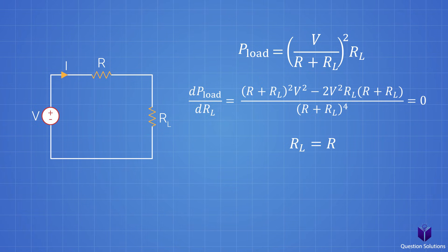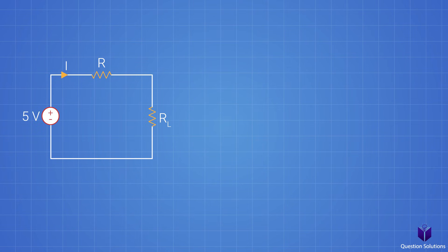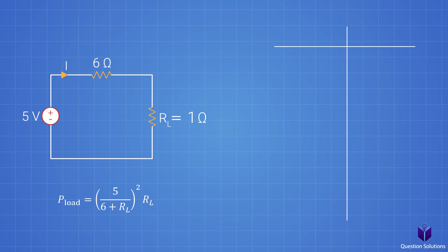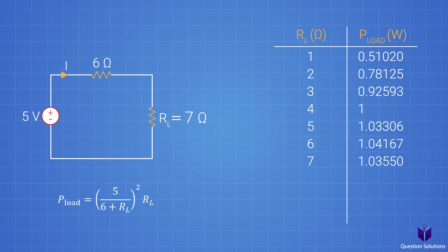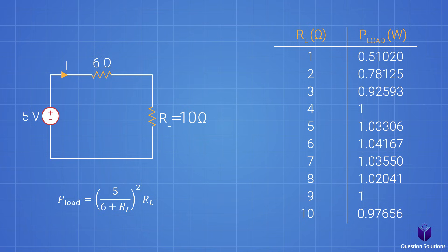To showcase this, let's plug in some numerical values. We'll go with a 5 volt source, a 6 ohm resistor, and RL starting at 1 ohm. We plug in different RL values: at 1 ohm we get 0.51 watts, then 2, then 3, and so forth. According to what we found, at 6 ohms — when RL equals R — we should get the biggest value, and we get 1.041 watts. At 7 ohms it starts going back down, and once we go past 6 ohms the power decreases again. So the takeaway is that when RL has the same value as R, that is the maximum power transfer possible.